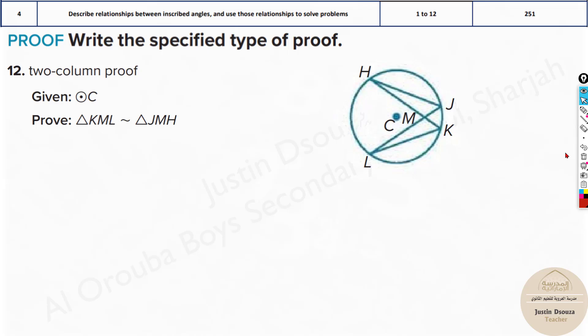And what about this one? Now they have told, prove triangle KML and triangle MJH are similar. We can easily do this. This is one triangle and this is one more triangle. We have to prove just similarity. You know the AA similarity is very simple. Angle, angle, similarity. Let's do that.